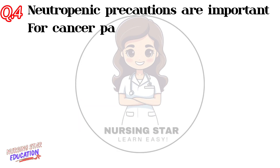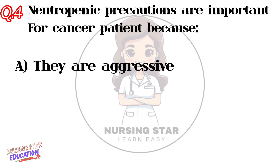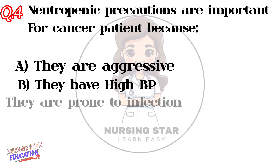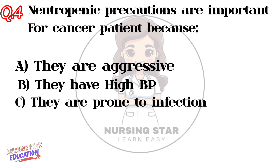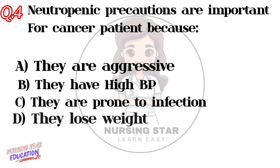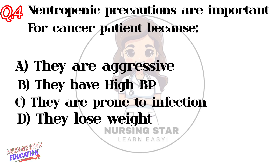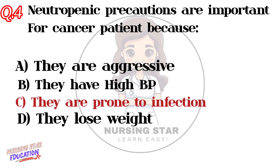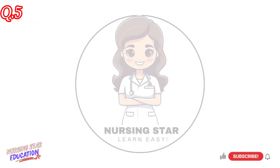Question number four: Neutropenic precautions are important for cancer patients because — Option A: They are aggressive. Option B: They have high BP. Option C: They are prone to infection. Option D: They lose weight. Correct answer: C — They are prone to infection.